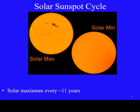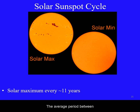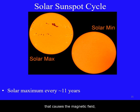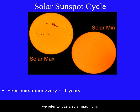Sunspots appear quasi-periodically on the face of the Sun. The average period between the greatest number of sunspots is about 11 years. Because the solar power output that causes the magnetic field that then causes the sunspots is greatest at this time, we refer to it as a solar maximum.